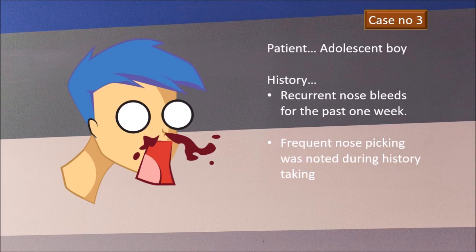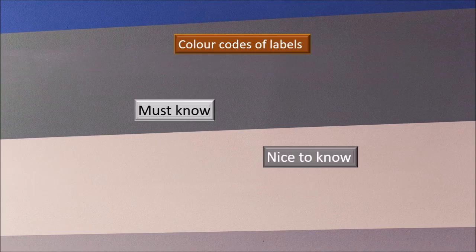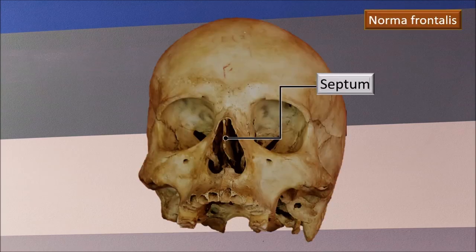There is some kind of damage to the nasal septum or the anterior nasal area, such that the blood vessels are torn and there is bleeding. Before we start the discussion, these are the color codes for the labels used: black script on a light gray background is must-know material; dark gray background with white script is nice-to-know. I have deliberately avoided writing 'need not know.'